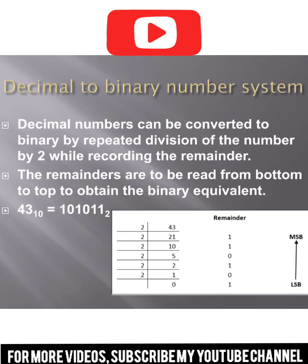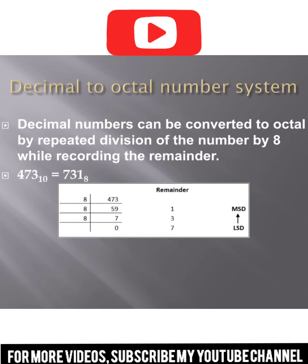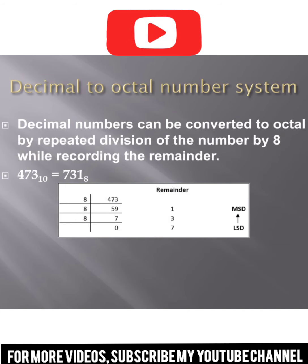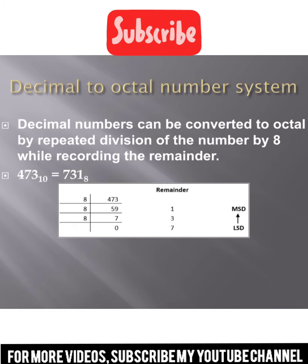We convert the decimal number system to binary number system this way. Next, when we convert decimal, we convert the decimal number system to octal.